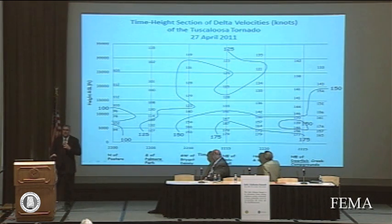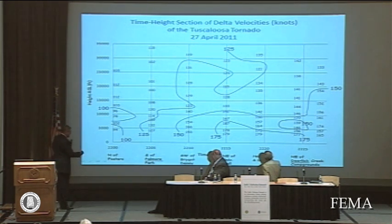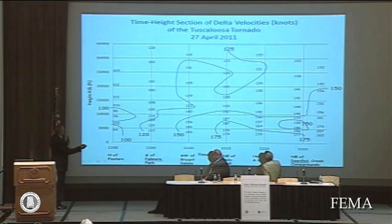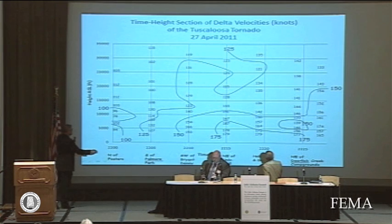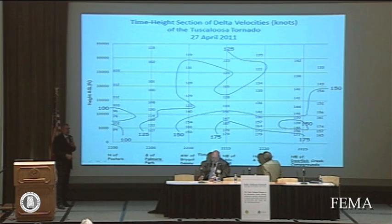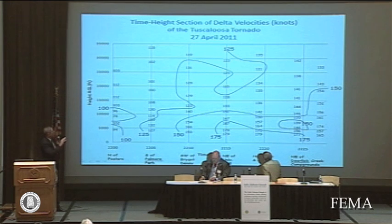Just to show you the incredible rotation that occurred with some of these storms, we took a cross-section and looked at the tornado that came across Tuscaloosa. You can see here, at a height of close to 35,000 feet — about six miles high — this was rotating at 125 knots, 140 miles an hour. So six miles high in the atmosphere, this tornadic thunderstorm was rotating at 140 miles an hour, and in the lowest mile, 5,000 to 7,000 feet, it was rotating at over 200 miles an hour — just some of the highest wind shear and highest delta velocities within a thunderstorm that many of us have ever seen.